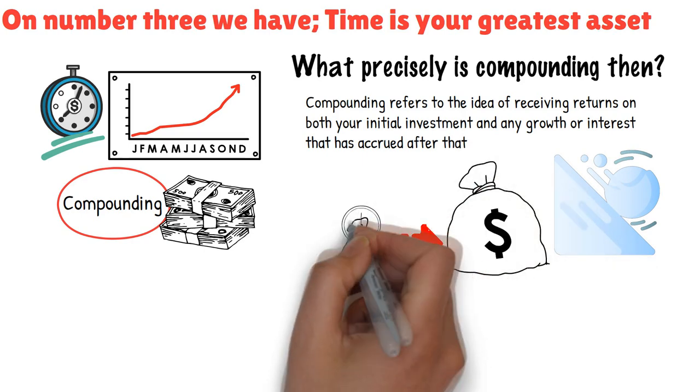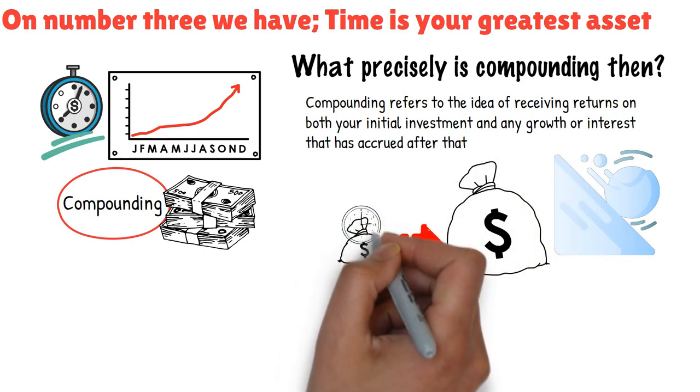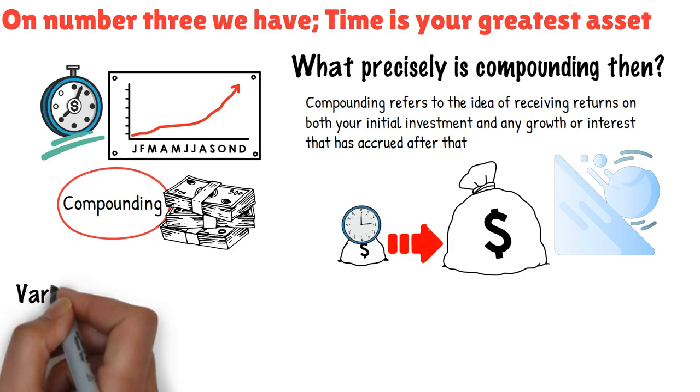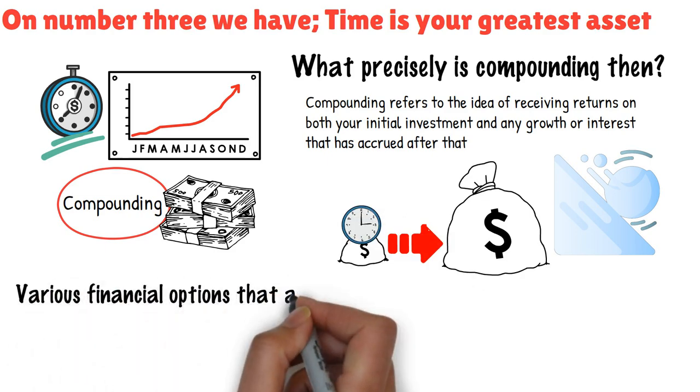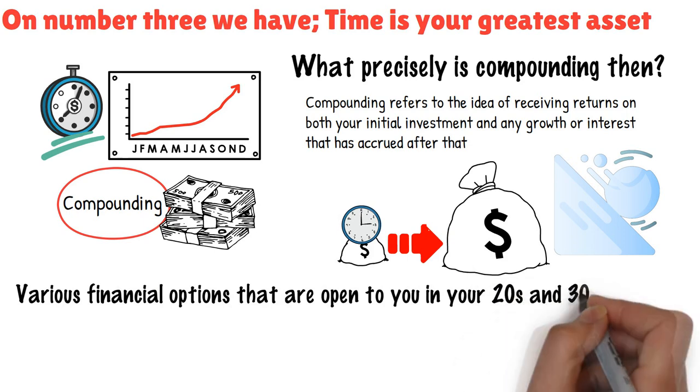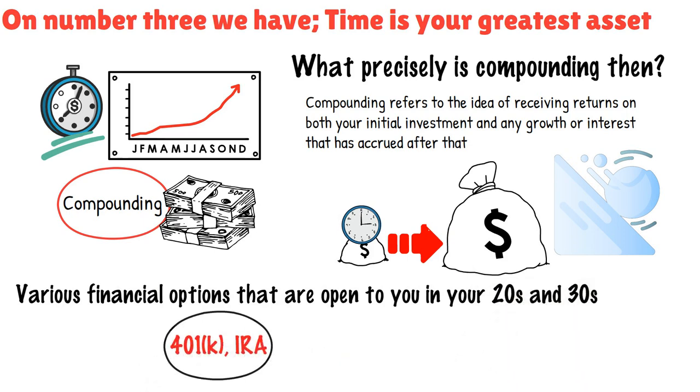This means that your money can grow tremendously over time depending on how long it is invested. Now let's talk about the various financial options that are open to you in your 20s and 30s. A retirement account like a 401(k) or an Individual Retirement Account (IRA) is one of the most popular and easily accessible choices.